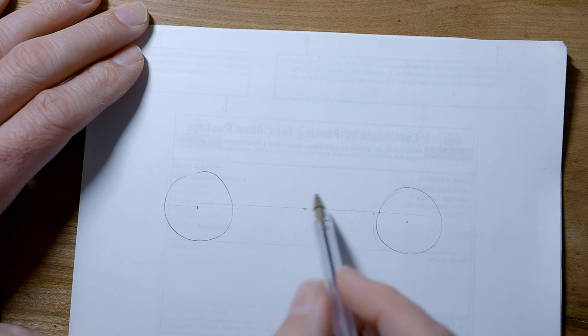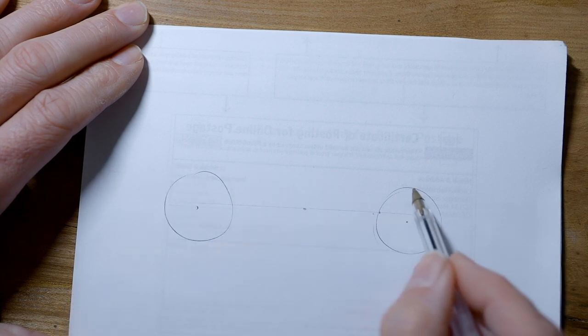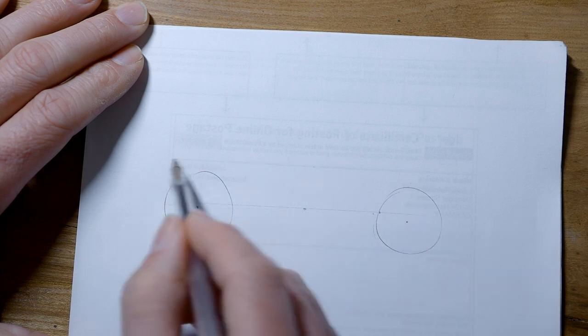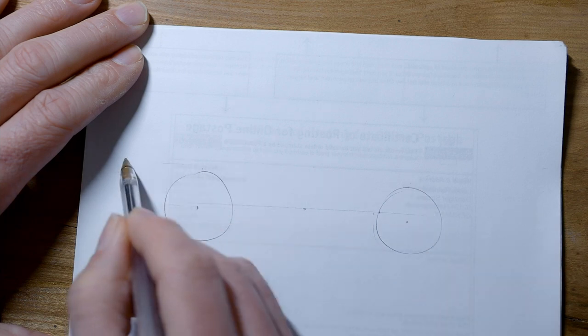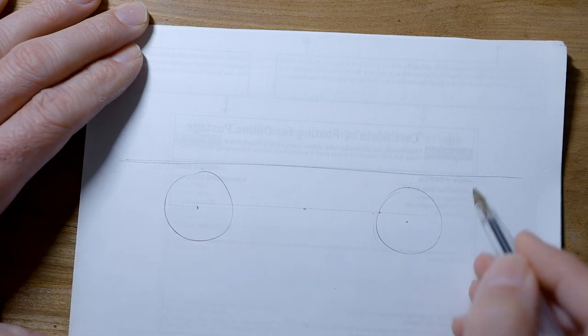And then we need another one, which is the waistline of the car, which is going to be just above the front. Well, we'll call this the front wheel, just a tiny bit above.